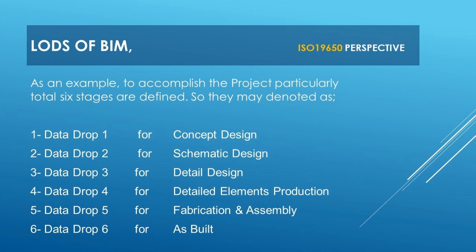As an example, to accomplish a project, a total of six stages are defined. They may be denoted as: Data Drop 1 for concept design, Data Drop 2 for schematic design, Data Drop 3 for detail design, Data Drop 4 for detailed elements production, Data Drop 5 for fabrication and assembly, and Data Drop 6 for as-built.